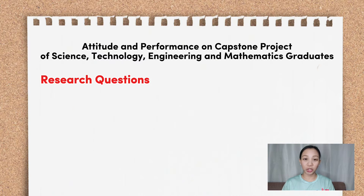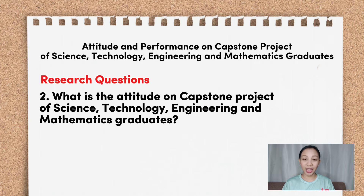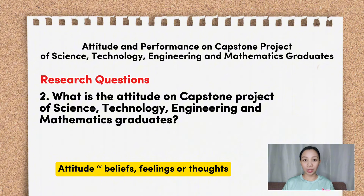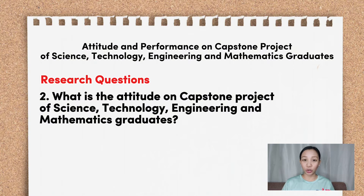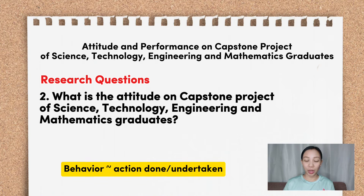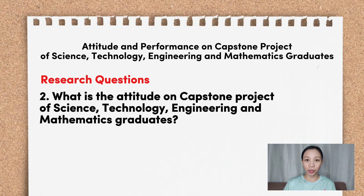Moving forward to research question number 2: What is the attitude of the Science, Technology, Engineering, and Mathematics graduates on capstone project? When we say attitude, it refers to the beliefs, feelings, or thoughts of the sources of data — in short, of the respondents. The counterpart of attitude is behavior. When we use the variable behavior in research, it refers to the action of the individuals or respondents. In the case of this research, we focus on attitude as the variable.